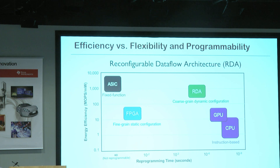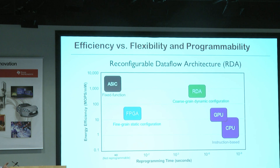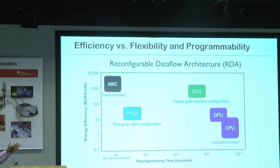You have to reconfigure it, but once you've reconfigured it, it's optimized. You can space-share — you could say this part of the chip is going to do CNN and that part of the chip is going to do LSTM.